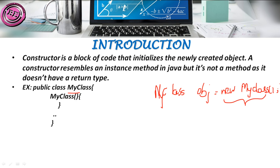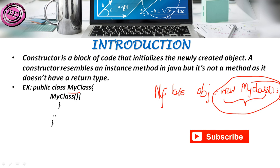So here we created a method, and this method represents a constructor. A constructor resembles an instance method in Java, but it is not a method as it doesn't have any return type. So 'new MyClass()' represents a type of method, but it is not a method because it doesn't have a return type. A method is a set of code which has some return type, but a constructor doesn't have a return type.